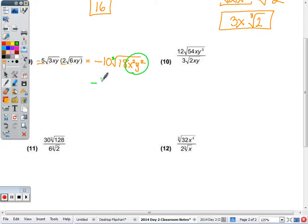So I'm going to pull out the square root of x squared y squared, which is xy, and I'm just going to break down the 18. Largest perfect square factor of 18 is 9. It's 9 times 2. Square root of 9 is 3. Times that negative 10xy is negative 30xy radical 2.